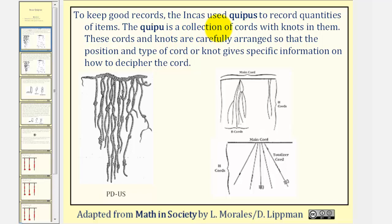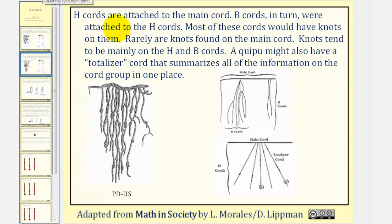Welcome to a lesson on quipus. To keep good records, the Incas used quipus to record quantities of items. The quipu is a collection of cords with knots in them, as we see pictured here on the left. These cords and knots are carefully arranged so that the position and type of cord or knot gives specific information on how to decipher the cord.